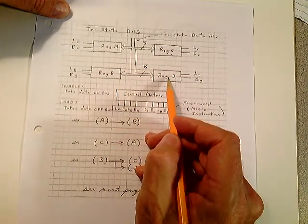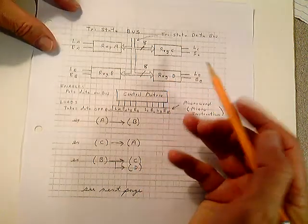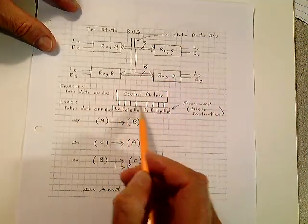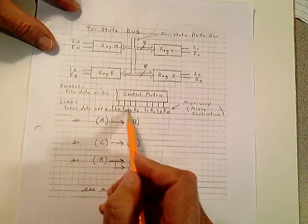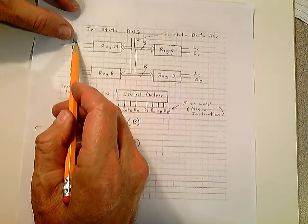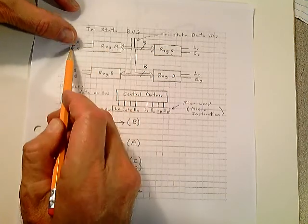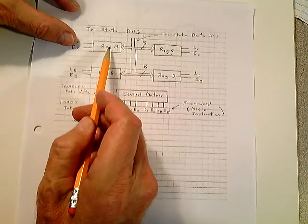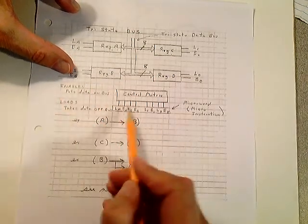Register A will do the same thing. Register B will do the same thing. And register D will do the same thing. So we have what we call a control word. This is a micro word or a micro instruction. And how do we make up the micro instruction? LA, here's your LA. Load accumulator. Load register A. Here's enable A. Enable accumulator A. And here's load B. Enable B. Just going across here.